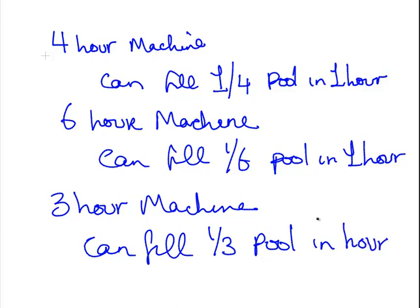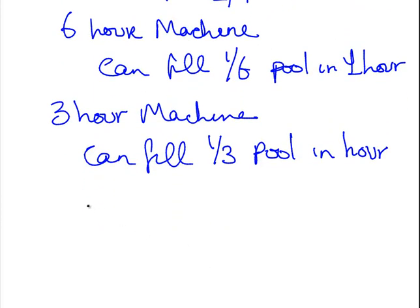So 1 quarter plus 1 sixth plus 1 third, that's actually 3 quarters. That's actually something we worked out already. That's 18 over 24, which is 3 quarters. So if all 3 machines working together, in the first hour, 3 quarters of the pool will be filled up.